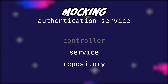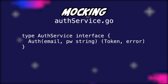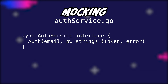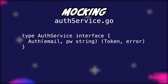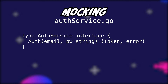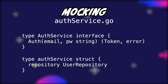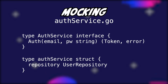For the explanation, let's focus on the service and the repository. If you were to implement the service, the interface could define an auth function which takes an email and a password as arguments and returns a token and an error. Since the service is accountable for authenticating and issuing the token, it needs the user repository in order to retrieve data from the database.